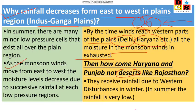The most important second reason is rainfall due to western disturbance. We have understood this well in the 17th part: western disturbance is created in the Mediterranean Sea.